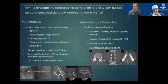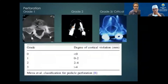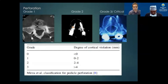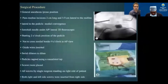Methodology: pedicle screw perforation, location, grading, and critical versus non-critical plus neurological complications were evaluated. Perforation grading on CT scan: Grade 1 is 0 to 2 mm of cortical violation, Grade 2 is 2 to 4 mm of cortical violation, and Grade 3 is critical where there is more than 4 mm of cortical violation. This is the MIS-TELIF classification for pedicle perforation.